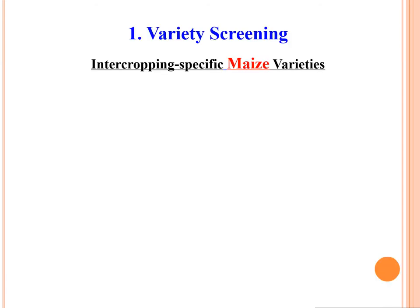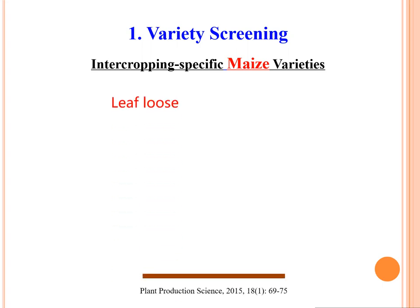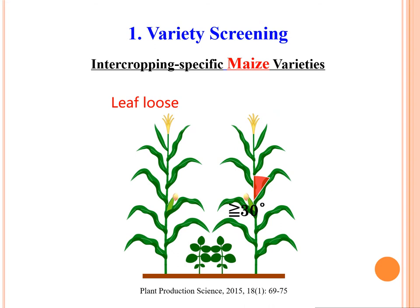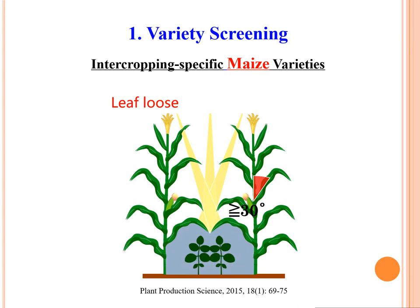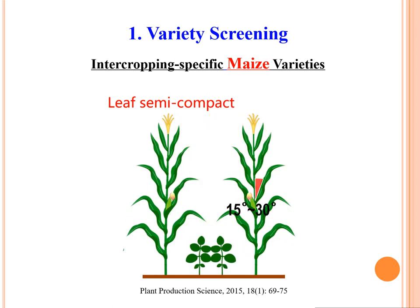The first core technology is variety screening. We need to develop intercropping-specific maize varieties. Previously, farmers used a spreading type of maize with a leaf angle between stem and leaf greater than 30 degrees, which blocked light transmittance to the soybean canopy, causing large soybean yield losses. We developed a maize variety with a leaf angle between 15-30 degrees, which improves light transmittance at the top of the soybean canopy.